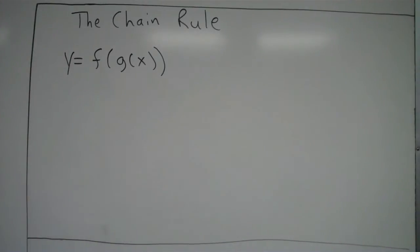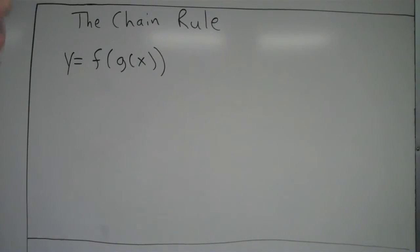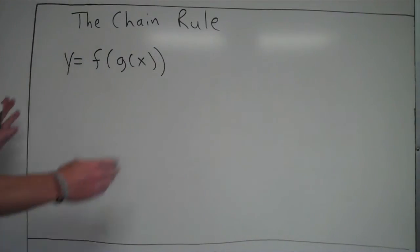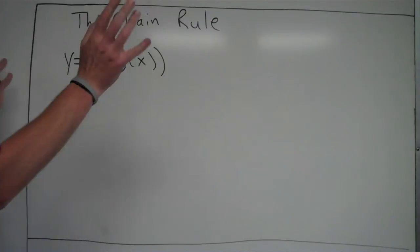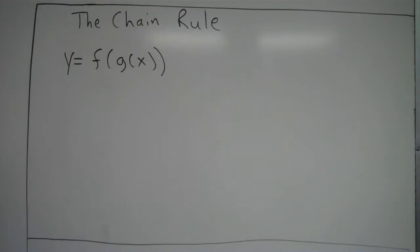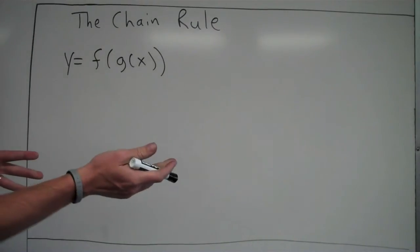We're going to take a look at the chain rule, which is a rule used when taking derivatives. It really opens the door for us in terms of being able to take the derivative of essentially almost any function you want, when you combine it with the product and quotient rule. So what I'm going to show you initially is the definition of what the chain rule is, and it's a little bit difficult to comprehend without seeing an example.